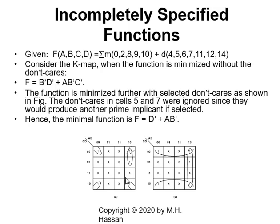In case A, without using the don't care, we found F to be B'D' or AB'C'. Those two cells represent a group of four because they are logically adjacent, and those two cells — combining one cell with another — give me a group of two. This group of two gives me AB'C'. As you can see, A is 1, B is 0, so this is AB'; the 0 cancels for D, so I have C'. This is the second term of the function.